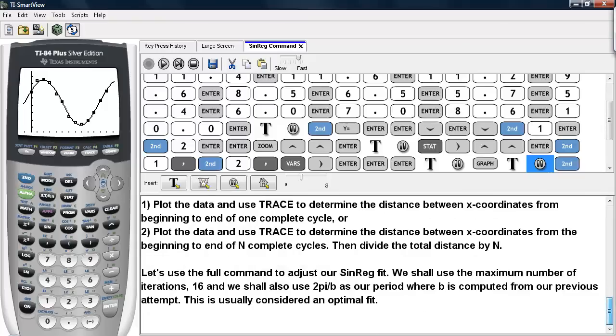So in this next part, we're going to use the full command to adjust our sinreg fit. We'll use the maximum number of iterations. And we'll also use 2 pi divided by b as our period, where b is computed from our previous attempt. And this is usually considered an optimal fit for the calculator.